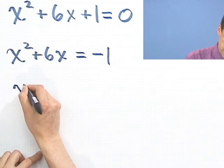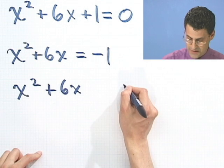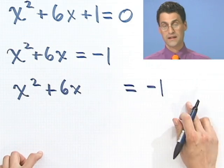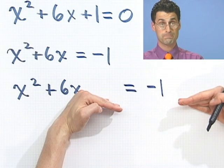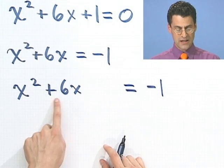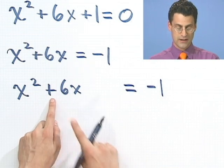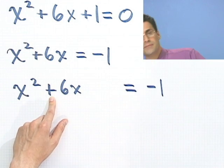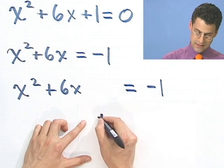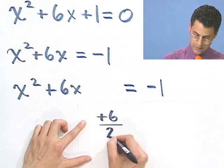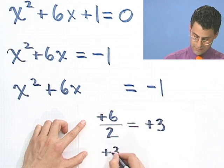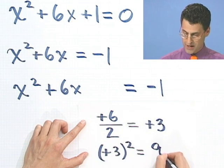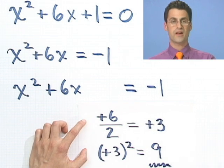Now I'm going to add something to make the left side a perfect square. I write the x squared and 6x with a huge space, because I'm going to put something in there. To keep the equation balanced, whatever I add here I must add on the other side too. Here's what you do: look at the coefficient in front of the x term — that's plus 6. Take half of it: half of 6 is plus 3. Now square it: 3 squared equals 9. That is the number that's going to complete the square. The procedure is always the same — take the coefficient of the x term, take half of it, square it, and that's what you add.